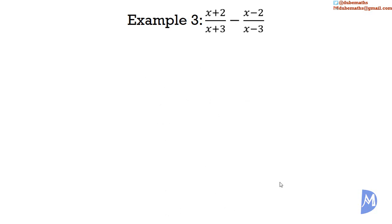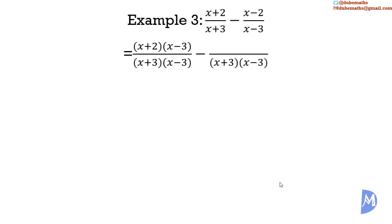Example 3: (x plus 2) over (x plus 3) subtract (x minus 2) over (x minus 3). The LCM of (x plus 3) and (x minus 3) is (x plus 3)(x minus 3). We express the first fraction over the LCM by multiplying both numerator and denominator by (x minus 3). For the second fraction, we multiply both numerator and denominator by (x plus 3). Both fractions now share the same denominator, so we add the numerators.